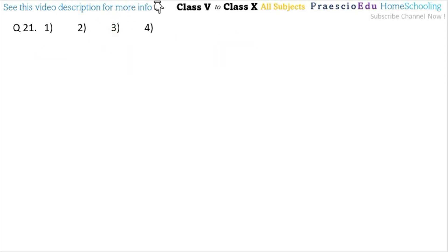Question number 21: How many months in a year have 30 days each? Out of 12 months, there are 4 months having 30 days each. Answer is option number 1.